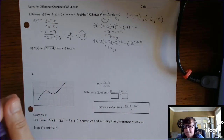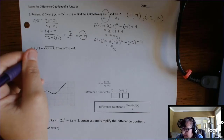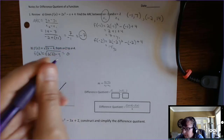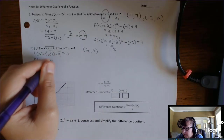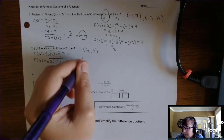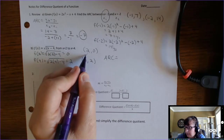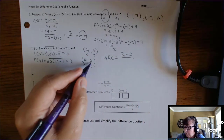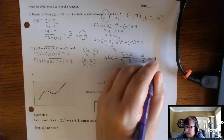Okay, you try this one — pause the video. f of 2 is the square root of 2 times 2 minus 4, which is 0. So the ordered pair is 2, 0. f of 4 is the square root of 2 times 4 minus 4, which is the square root of 4, which is 2. Ordered pairs 2, 0 and 4, 2 give an ARC of 2 minus 0 over 4 minus 2 equals 1.